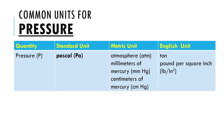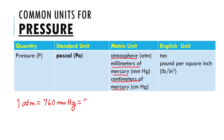For the pressure of the gas, the standard unit is in Pascal, symbolized by Pa. For the metric units, there are atmosphere, millimeters of mercury (mmHg), and centimeters of mercury (cmHg). For the English unit, it can be ton or pound per square inch. One atmosphere is equivalent to 760 mmHg, 76 cmHg, and 760 Torricelli (Torr).